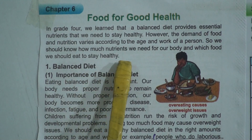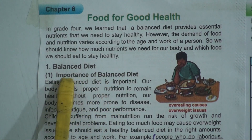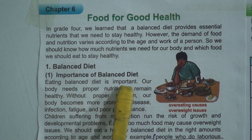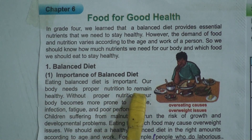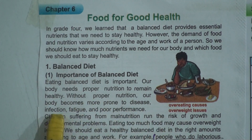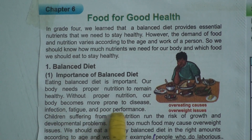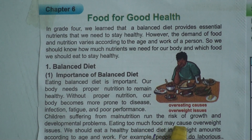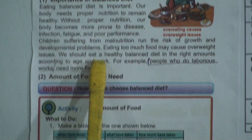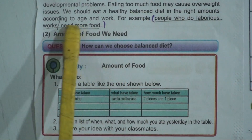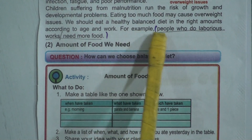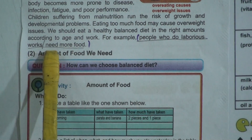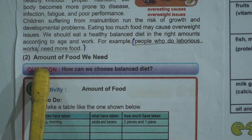Now let us look at the importance of a balanced diet. Eating a balanced diet is important; our body needs proper nutrition to remain healthy. Without proper nutrition, our body becomes more prone to disease, infection, fatigue, and poor performance. Children suffering from malnutrition run the risk of growth and development problems. Eating too much food may cause overweight issues. We should eat a healthy balanced diet in the proper amount according to age and work. For example, people who do laborious work need more food.